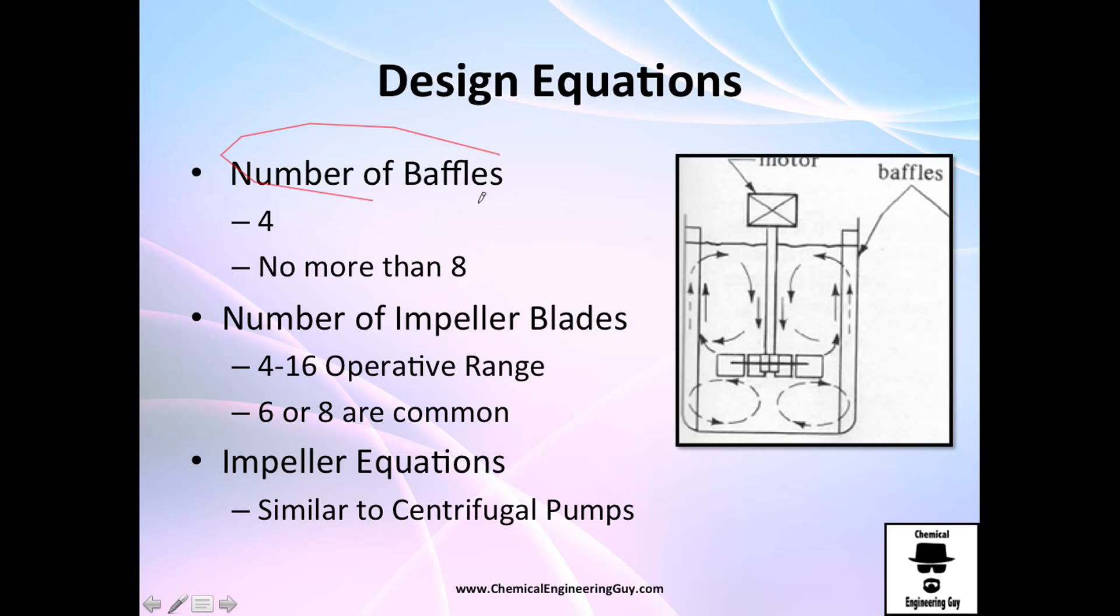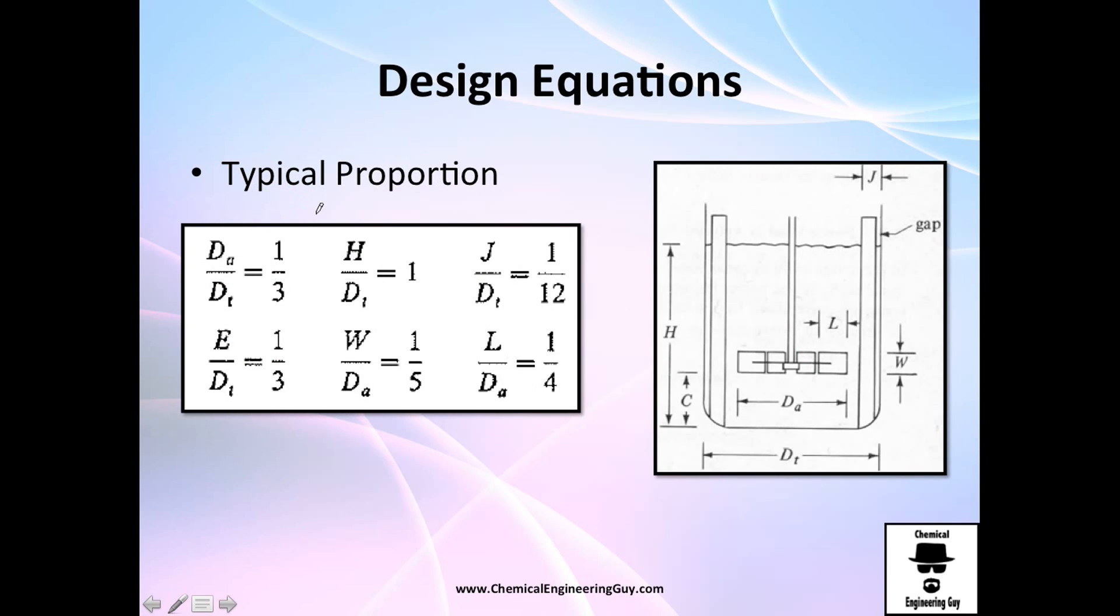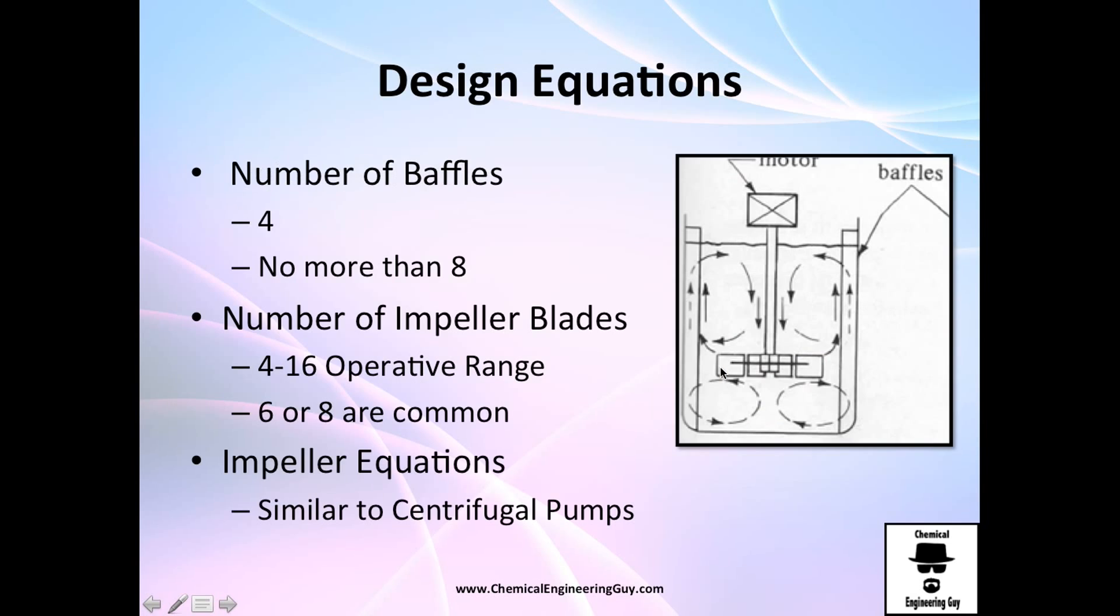Number of baffles recommended are between 4 and no more than 8. If you add more than 8, it's exaggeration, you don't need more. The number of impeller blades is between 4 and 16. Between 6 and 8 is the most common operation. So expect 6 blades or maximum 8 blades. If you have no idea, choose 6, 4 baffles, and this type of ratio. Probably you're going to have the diameter here, and you will recommend one height, or you will start recommending with respect of one diameter.